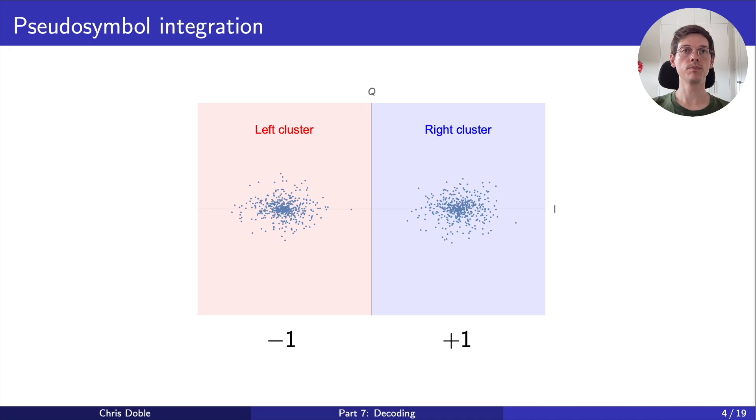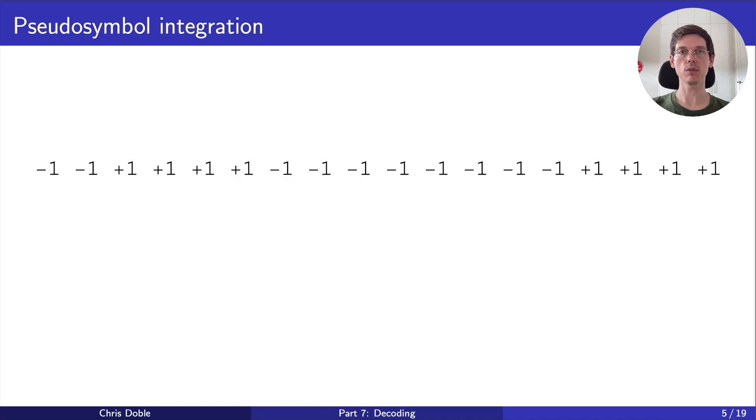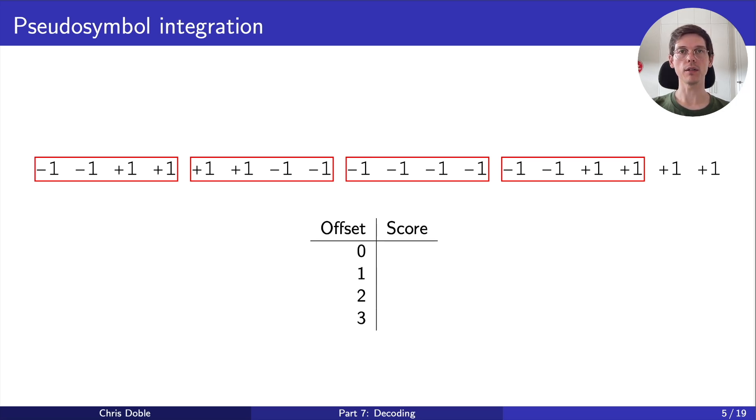We can determine the boundaries between different bits by collecting a large number of pseudo-symbols and checking each possible grouping to find the one that maximizes similar values. For example, let's say we received these 18 pseudo-symbols. I'm going to collect them into groups of 4 instead of 20, just so it's a little easier to see.